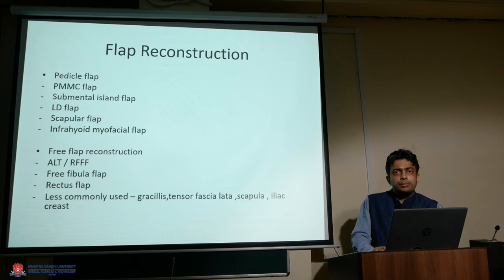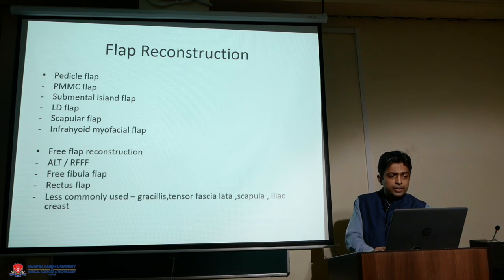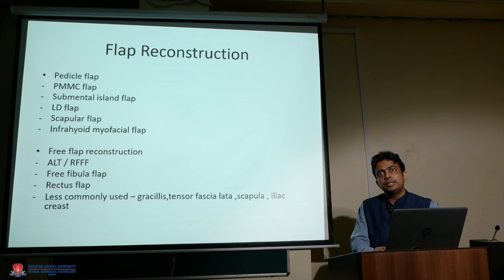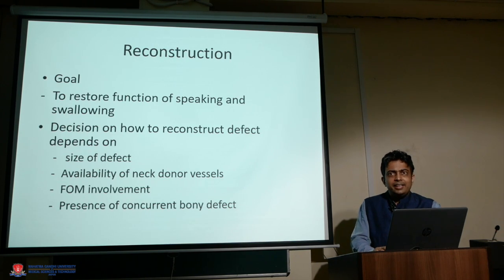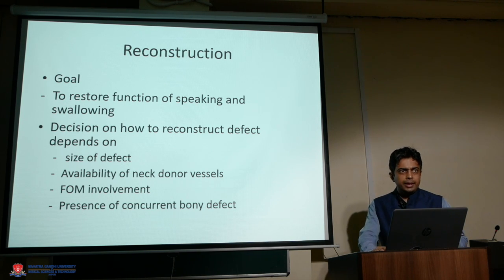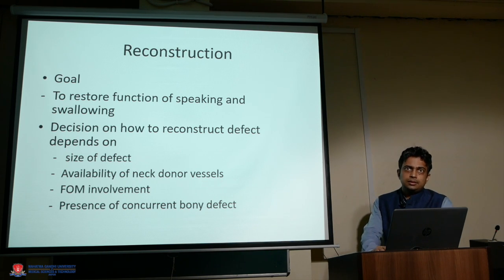Reconstruction is an important aspect of tongue cancer management. When the defect is less than one-third, primary closure may suffice; larger defects require flap reconstruction. Pedicled flaps include the pectoralis major myocutaneous flap and submental flap; free flaps include radial forearm and anterolateral thigh flaps. Bone involvement requires free fibula flap reconstruction. The goal is to restore speech and swallowing function. Floor of mouth management will be discussed in the next class.